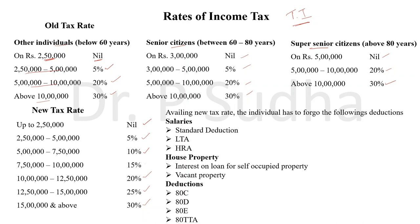What are those deductions? Under the head salaries: standard deduction, LTA, and HRA — these three deductions he cannot claim. Under house property: interest on loan for self-occupied property and provisions for vacancy period — that also he cannot claim. Then while calculating deductions: deductions under sections 80C, 80D, 80E, and 80TTA — he cannot claim all these deductions. When total income is calculated, the assessee has to calculate total income without availing these deductions if following the new tax rate.